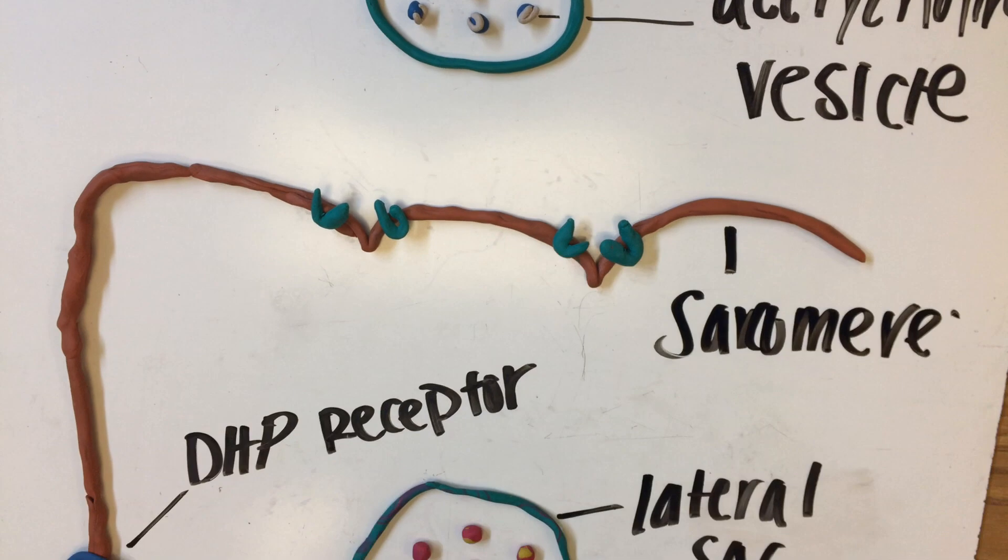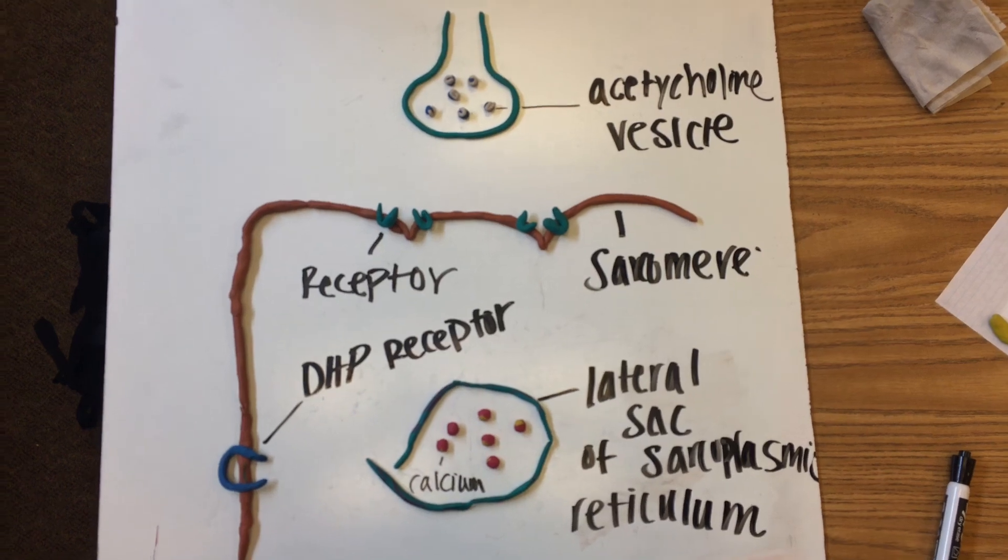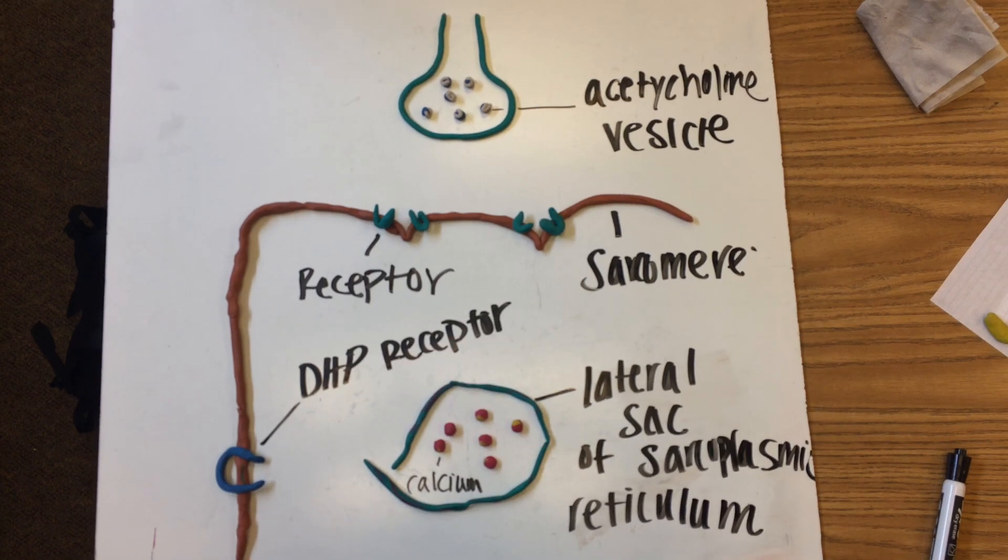The sarcolemma is a specialized plasma membrane of the skeletal cell. It is a protective sheath that surrounds the whole cell. Over here we are going to have the receptors for the acetylcholine vesicles. All of these parts play an essential role in muscle contraction.